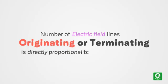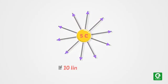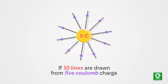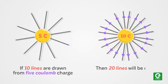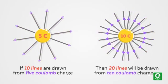The number of electric field lines originating or terminating is directly proportional to the magnitude of charge. For example, if 10 lines are drawn from a 5 Coulomb charge, then 20 lines will be drawn from a 10 Coulomb charge.